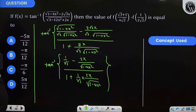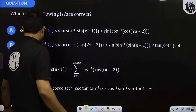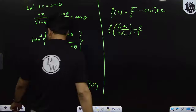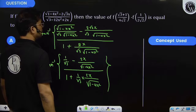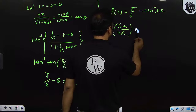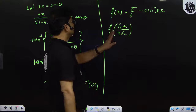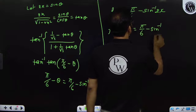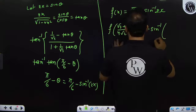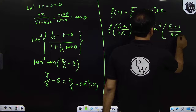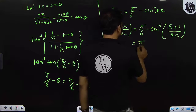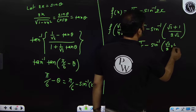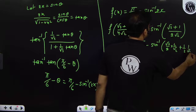Now we have to find the value of f(√3 + 1 / 4√2). We have to find f(√3 + 1 / 4√2). First, we compute π/6 - sin⁻¹(2x), where 2x = (√3 + 1) / 2√2. This value will be π/6 - sin⁻¹[(√3 + 1)/2√2].